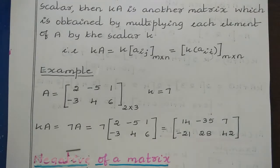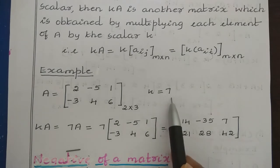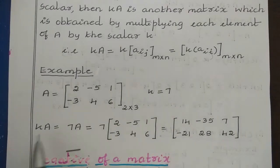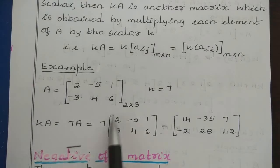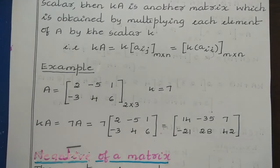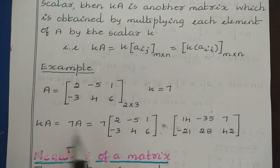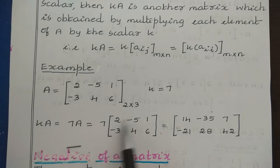A scalar means it is one value which we are multiplying with the matrix. So here K is equal to 7, and 7A means we multiply 7 into this matrix. Whenever you are multiplying a scalar with the matrix, that scalar value needs to be multiplied with each and every element. Here we have 6 elements and the scalar is 7, so 7 must be multiplied with all 6 elements.